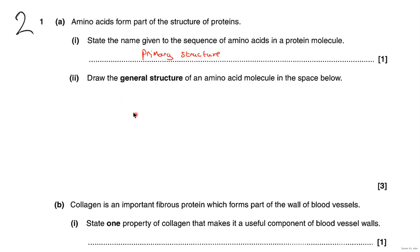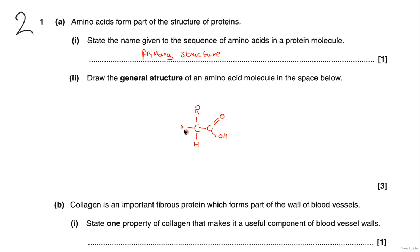The next question is to draw a general structure of an amino acid. You need a central carbon; coming off that you need another carbon which forms the carboxyl group. The central carbon will have an R group at the top and a hydrogen at the bottom. Whether they are on the top or the bottom doesn't matter, as long as you've got those. The next part would be a nitrogen attached to the central carbon.